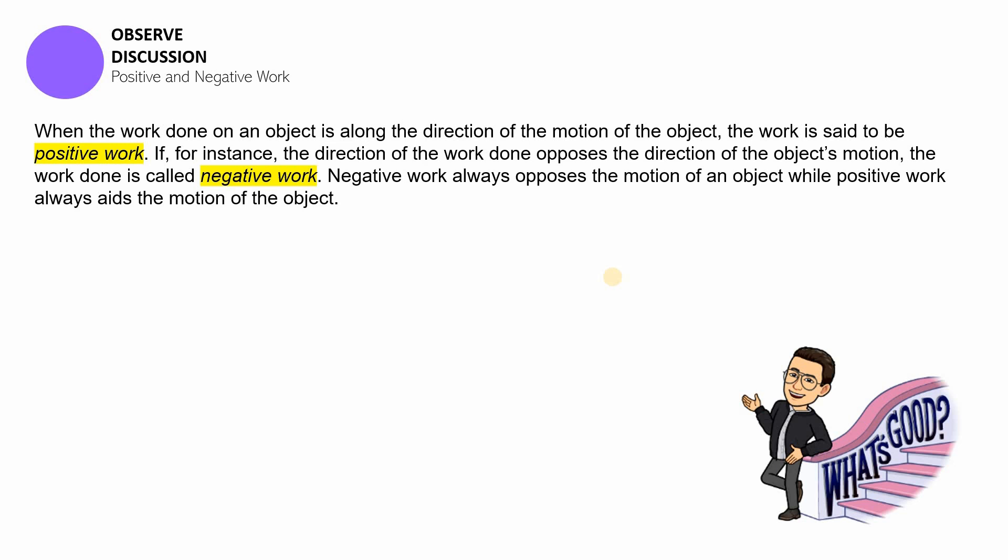Now, if, for instance, the direction of the work done opposes the direction of the object's motion, we can say that there was negative work. There are times when we are pushing something forward but that something is resulting to a backward motion. So, we can say that there was negative work kapag ganon. Negative work always opposes the motion of an object while positive work always aids the motion of the object.